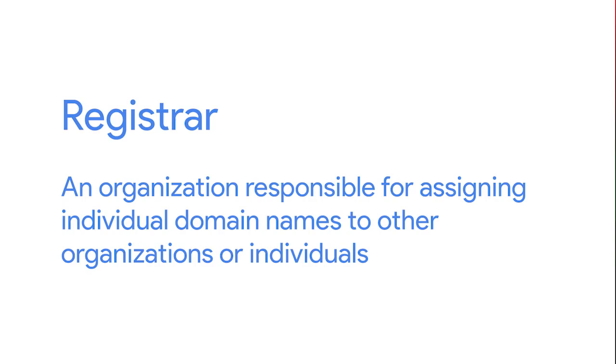Remember that DNS is a global system managed in a tiered hierarchy with ICANN at the top level. Domain names need to be globally unique for a global system like this to work — you can't just have anyone decide to use any domain name. Enter the idea of a registrar: an organization responsible for assigning individual domain names to other organizations or individuals. Originally, there were only a few registrars — the most notable was Network Solutions, Inc., responsible for the registration of almost all domains that weren't country-specific. As the popularity of the internet grew, there was eventually enough market demand for competition, and today there are hundreds of registrar companies all over the world.